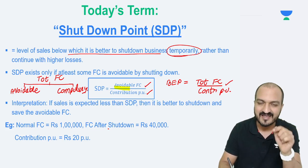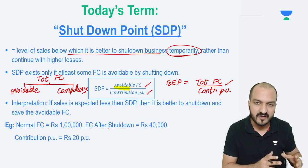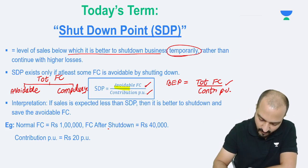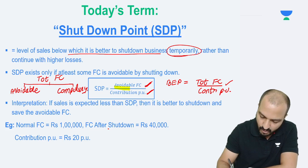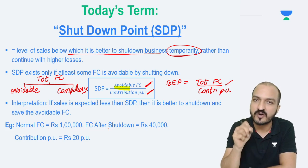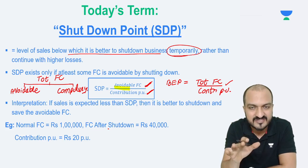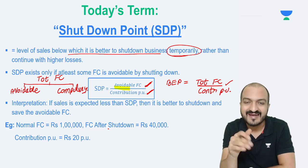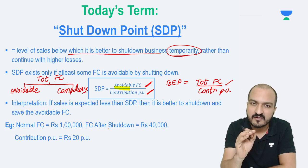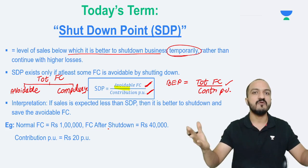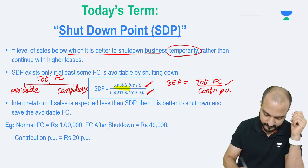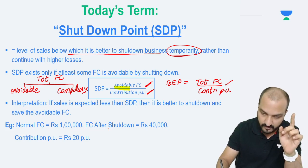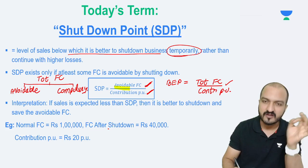To recover avoidable fixed cost, I need avoidable fixed cost divided by contribution per unit — that many units is what I need. If you are able to get that many units, then you continue. If you are not able to reach that level, then it is better to shutdown and avoid that avoidable fixed cost. If your sales are expected to be less than the shutdown point, it is better to shut down and save that avoidable fixed cost.